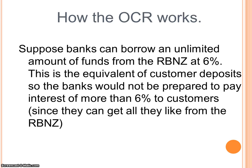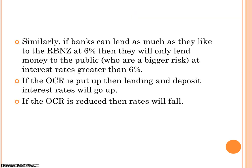Here's how it works: suppose banks can borrow an unlimited amount from the Reserve Bank at six percent. They won't pay us more than that for our deposits, so maybe they'll pay us four percent. At the same time, if they can lend to the Reserve Bank at six percent with no risk, they'll charge the public more than six percent because we're greater risk. In a nutshell: if the OCR goes up, loan and deposit rates go up; if the OCR goes down, interest rates fall.